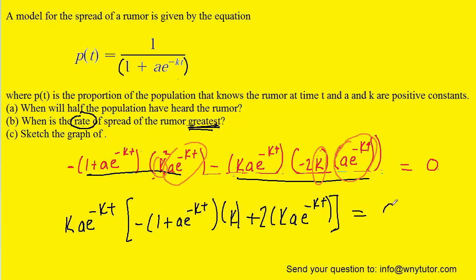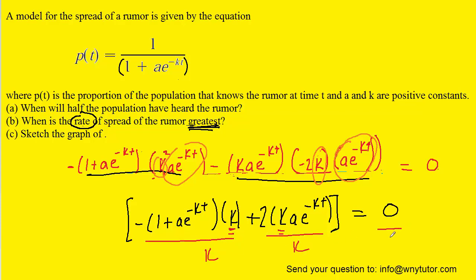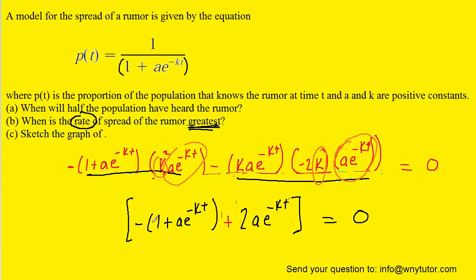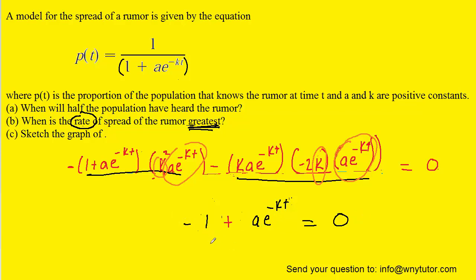We divide both sides by the factored expression to eliminate it. Looking carefully, there's still a factor of k present in each term, so dividing each term by k eliminates it. We then distribute the minus sign into the parentheses and notice like terms: negative one·ae^(−kt) plus two·ae^(−kt) can be combined. We add one over to the other side. At this point, this becomes the same equation we solved in part a, so following that same procedure, the time turns out to be ln(a)/k. The answers to parts a and b are the same.